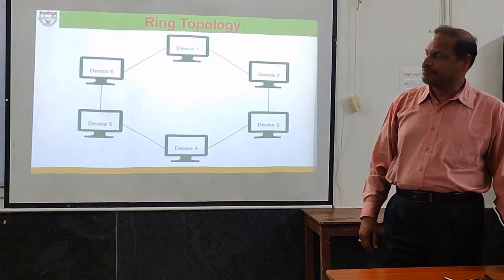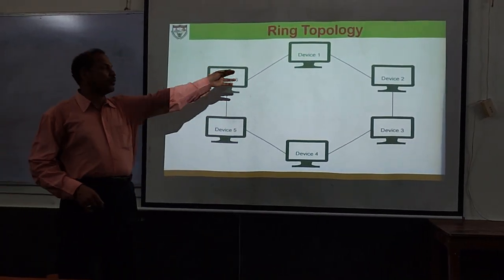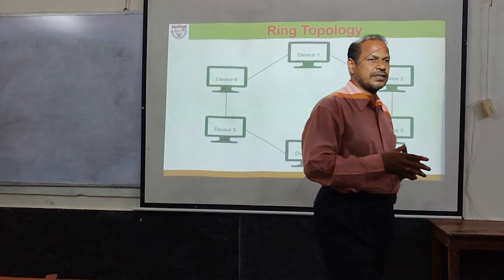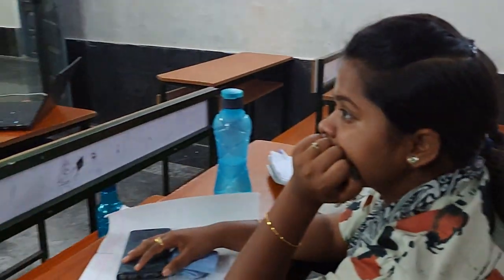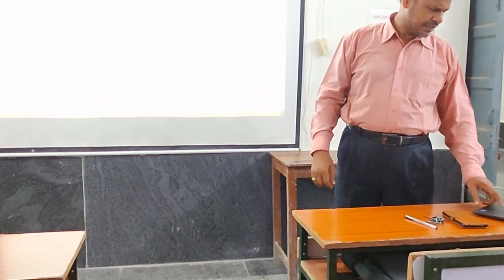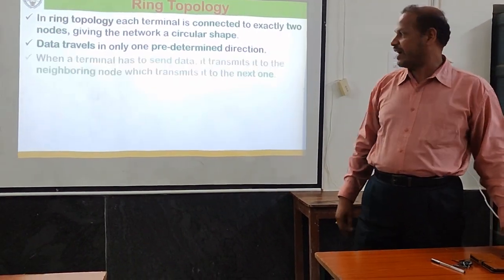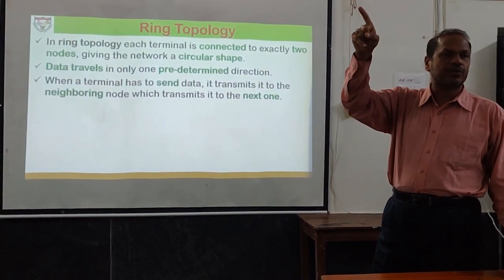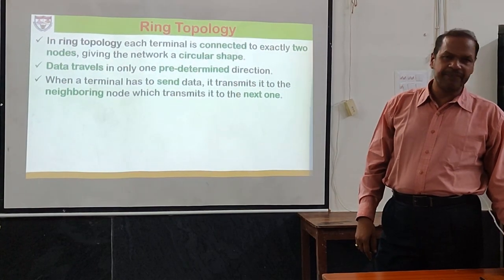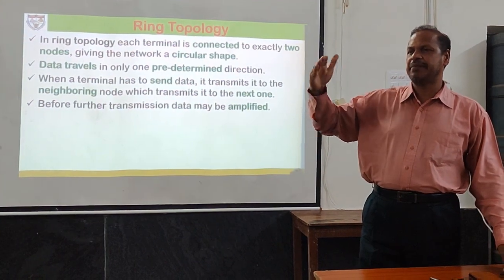To address the drawbacks of bus topology, ring topology was introduced. In ring topology, each node connects to its subsequent node in a circular fashion: 1 to 2, 2 to 3, 3 to 4, and so on, forming a ring. Data travels in a predefined direction — either clockwise or anti-clockwise. When a terminal sends data, it transmits to the next node; each node receives, amplifies, and forwards the data. This process continues until the data reaches its destination.